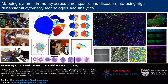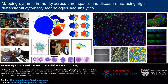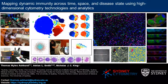It is my pleasure today to introduce our speaker, Dr. Thomas M. Ashurst of the Sydney Cytometry Facility located at the University of Sydney. Dr. Ashurst is a recognized high-dimensional cytometry specialist whose research has been focused on analyzing cellular infiltration in the virally infected central nervous system and understanding how the hematopoietic system is reorganized in the bone marrow to change cellular output in response to infection.